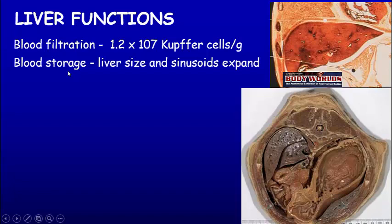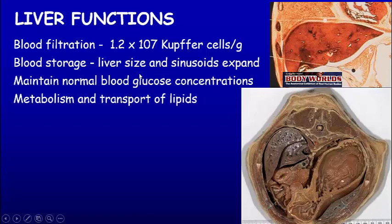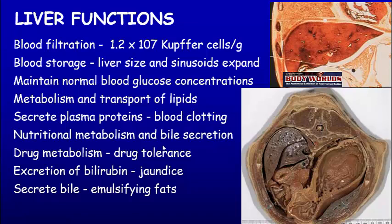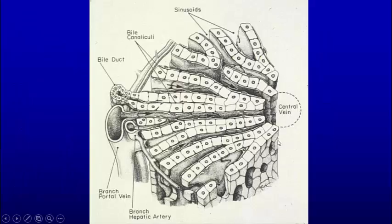The liver also stores blood in its large sinuses. It maintains normal glucose concentration — you eat, things are stored; as you don't eat, it breaks down glycogen to maintain glucose levels. It handles metabolism and transport of lipids, secretes plasma proteins for blood clotting, performs nutritional metabolism and bile secretion, drug metabolism, and detoxification. It also gets rid of bilirubin — without the liver we'd be jaundiced — and it secretes bile which emulsifies fat. There are a lot of functions the liver does to help us.